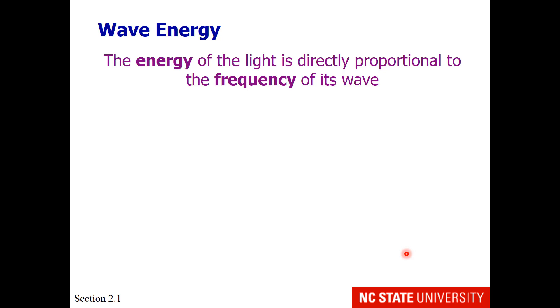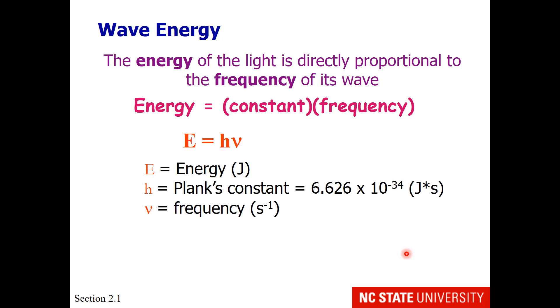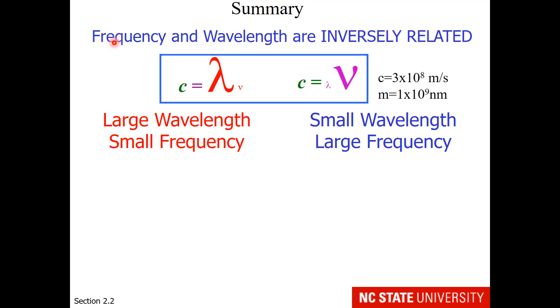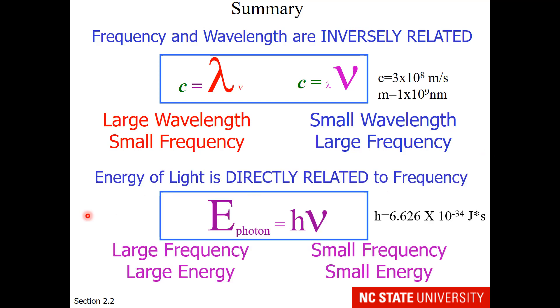It turns out that the energy of a particle of light is directly proportional to the frequency of its wave. So energy is equal to some constant times frequency. That constant is represented as h. This is Planck's constant. And it is 6.626 times 10 to the minus 34 joule seconds. So when you multiply a joule second times a second to the minus 1, you wind up with a unit of energy in joules. So to summarize this, I trust you already realize frequency and wavelength are inversely related. And the energy of light is directly related to frequency. So a large frequency means a large energy involved in that particular photon. Whereas a small frequency means a small energy involved in that particular photon.